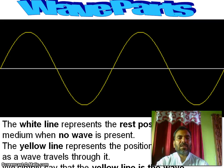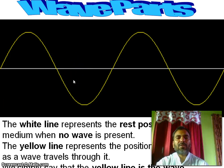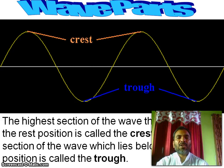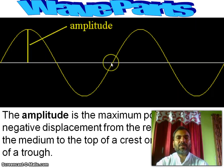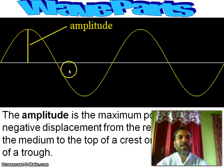Now, parts of waves. The white lines represent the raised positions of the medium when no wave is present. The yellow line represents the positions of the medium as a wave travels through it — we simply say the yellow line is the wave. The highest section of the wave that rises above the raised position is called the crest. The lowest section of the wave which lies below the raised position is called the trough.